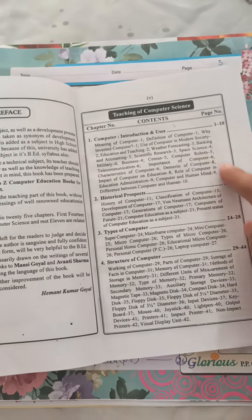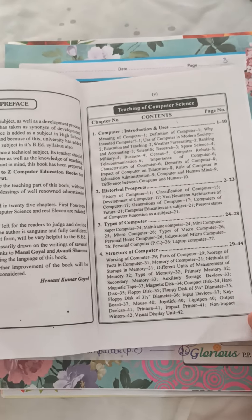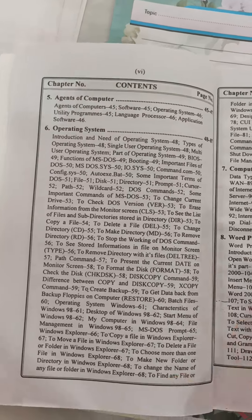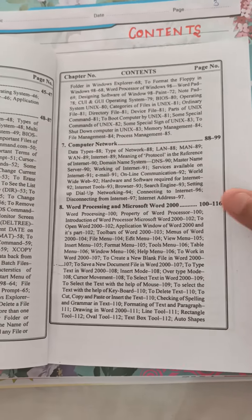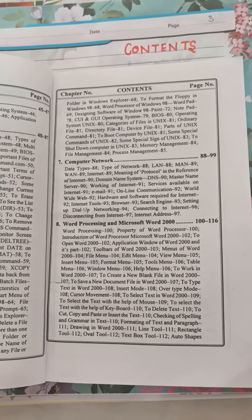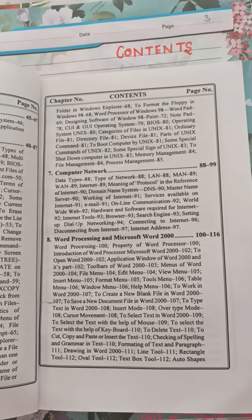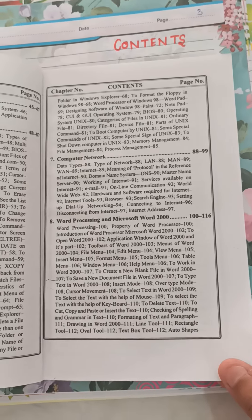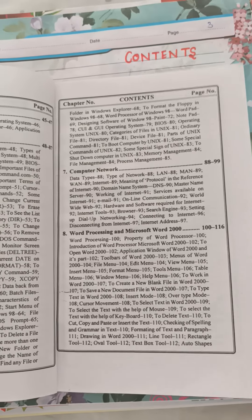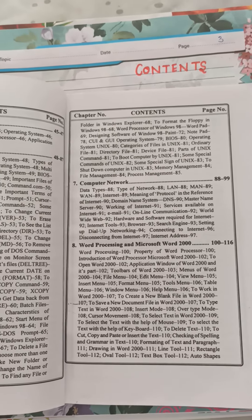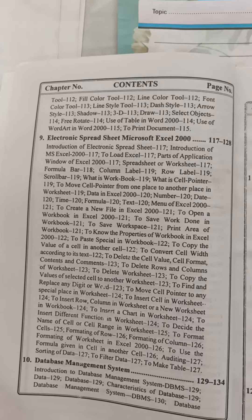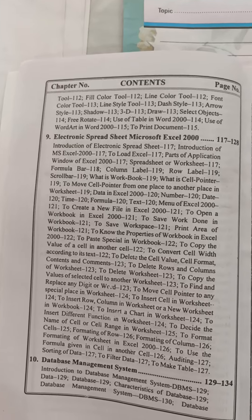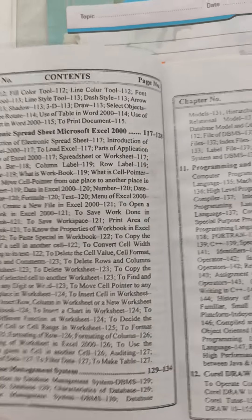Starting from the first chapter — introduction, users, historical prospects, types of computers, structure of computer, then the components of computer, operating system. You can see how widely it has been discussed. Then computer network, types of network, connectivity, word processing and Microsoft Word 2000 — in which we type, edit, and use different fonts. Then we have electronic spreadsheet, that's Microsoft Excel.